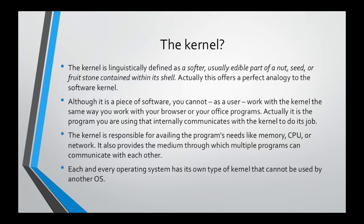Each and every operating system on the market has its own type of kernel that cannot be used by other OSes. For example, the kernel of Windows cannot be used by a Linux-based operating system, a Unix-based operating system, or an Apple Mac operating system. Each and every operating system has its own very specific kernel.